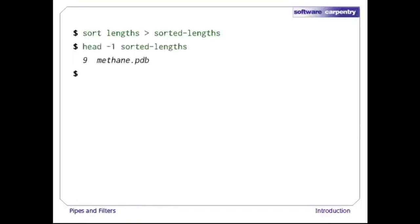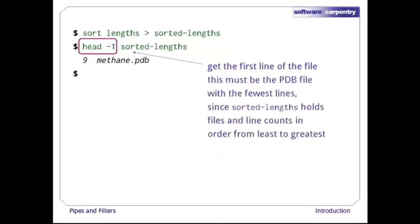And now, we can run another command called head to get the first few lines in sorted_lengths. Giving head the argument -1 tells us that we only want the first line of the file. This must be the file with the fewest lines, since sorted_lengths holds files and their line counts in order from the least to the most. If you think this is confusing, you're in good company — even once you understand what wc, sort, and head do, all those intermediate files make it hard to follow what's going on.